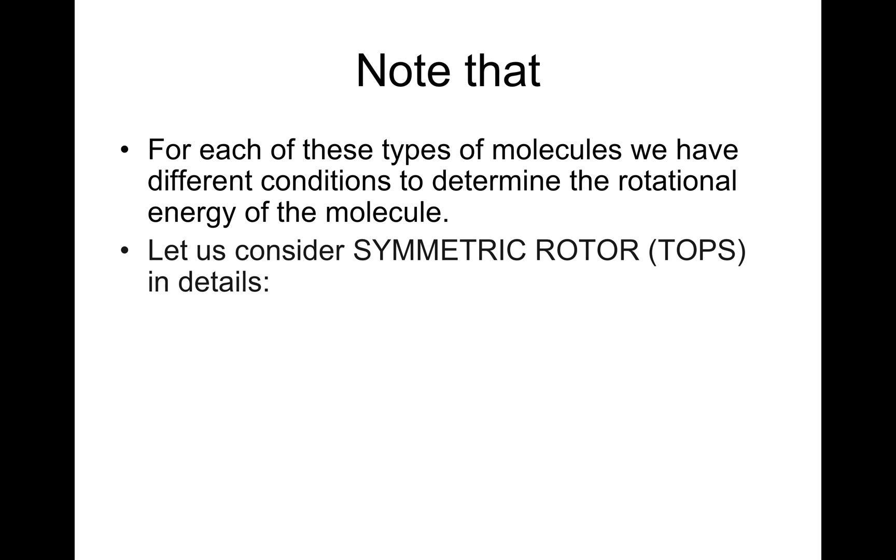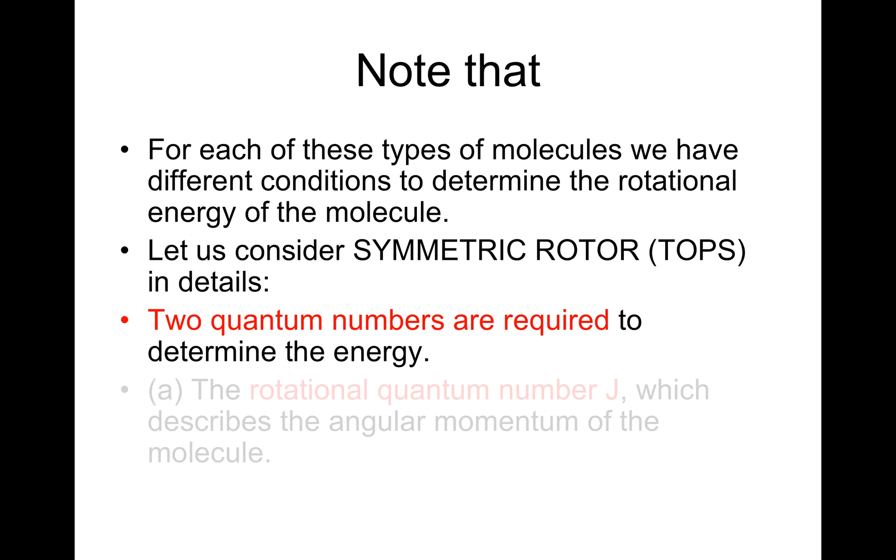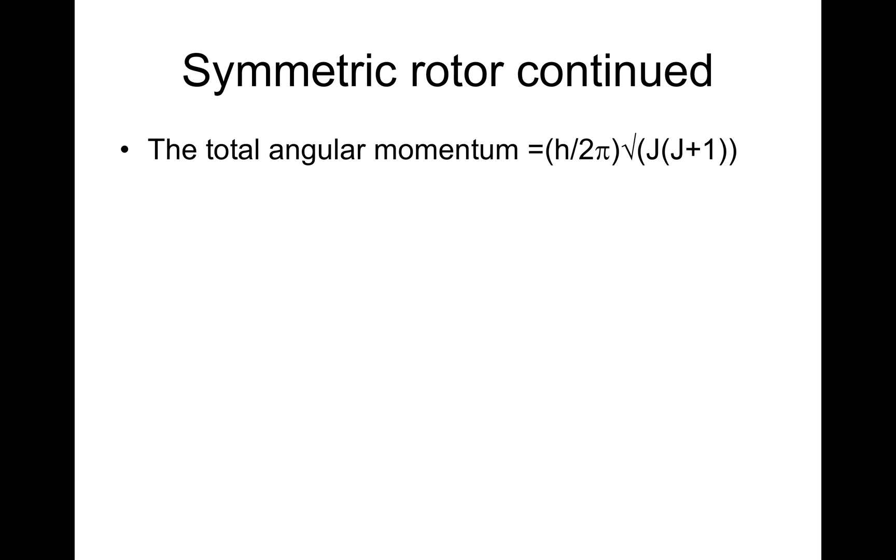Let us consider symmetric rotors or symmetric tops as they are sometimes known in detail. Two quantum numbers are required to determine the energy. A: the rotational quantum number J, which describes the angular momentum of the molecule. The total angular momentum in this case equals ℏ times the square root of J times J plus 1.